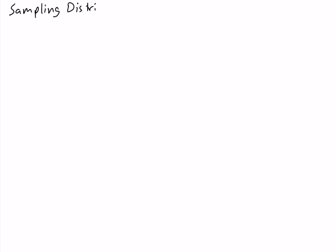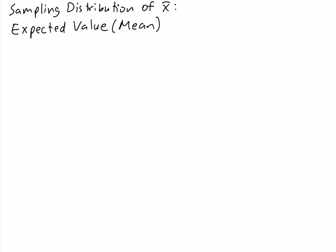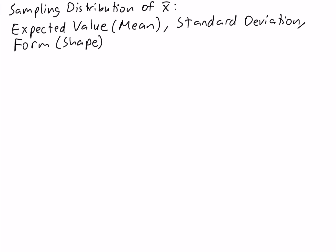We're going to be talking about the sampling distribution, or in other words, the probability distribution of the sample mean. What are the properties of the sampling distribution of x-bar? There are three things we need to know to fully describe it: the expected value or mean of the sampling distribution, the standard deviation, and the form or shape of the distribution. Once we know these three things, we fully understand the sampling distribution of the sample mean.